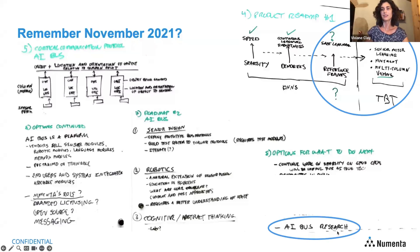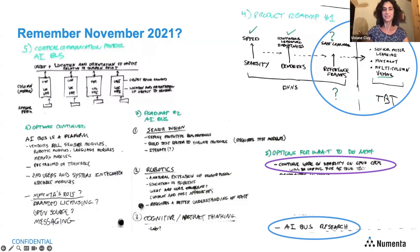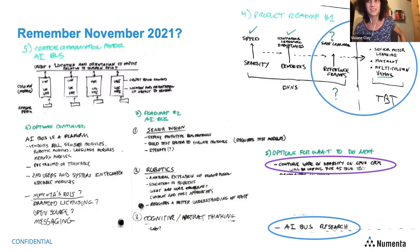I drew two circles around the AI bus research item, which I would say turned into the Monty project. The MEGA project was also listed there. But in any case, the idea of this common communication protocol was pretty much there at the beginning of Monty.